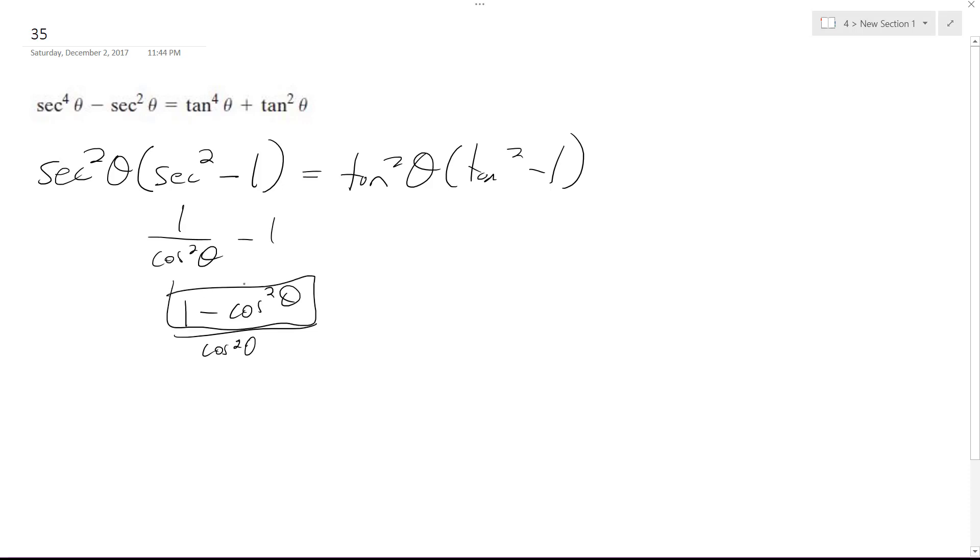This is a trig identity. It's equal to sine squared. So we get sine squared over cosine squared. So we get secant squared theta times tangent squared theta.